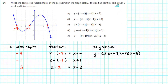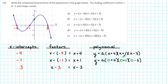We're told that the leading coefficient is either 1 or negative 1. To determine which one it is, we can use the fact that the y-intercept is positive. It's hard to tell exactly what the y-intercept is, but we can tell that it's a little bit more than 10 — it's clearly a positive value. So let's substitute 0 for x in our polynomial and see what value we get. We get a times 0 plus 4 times 0 plus 1 times 0 minus 3. Well, 4 times 1 times negative 3 is negative 12, so we get negative 12a.